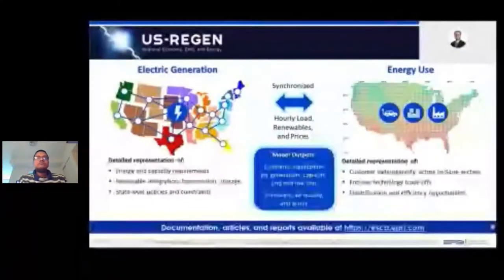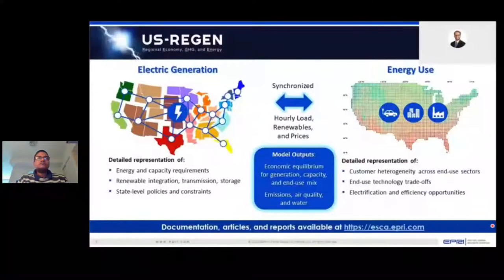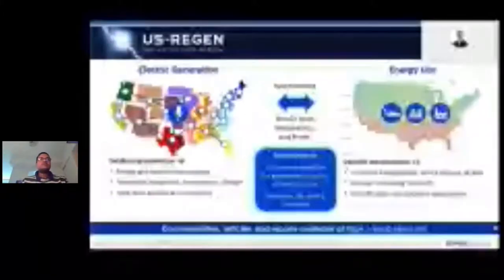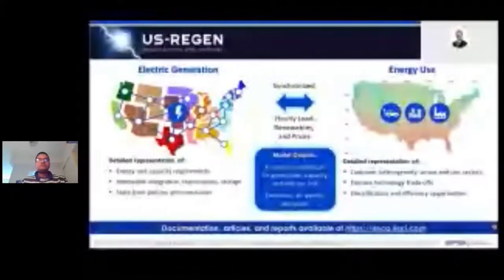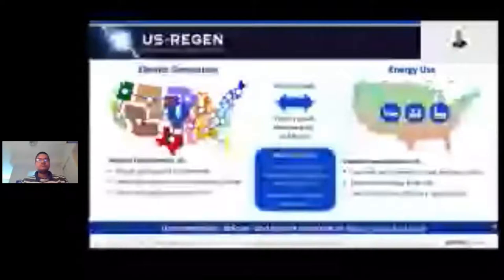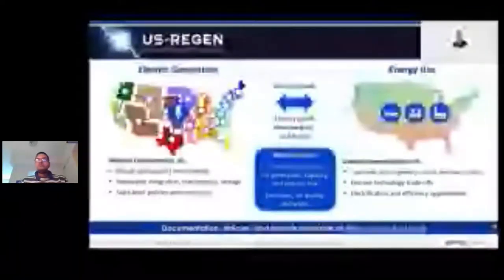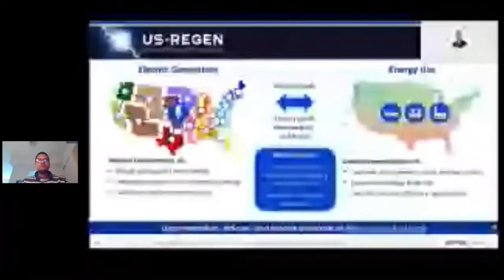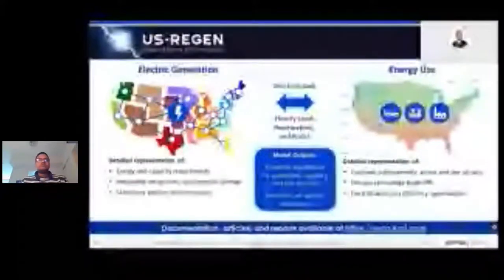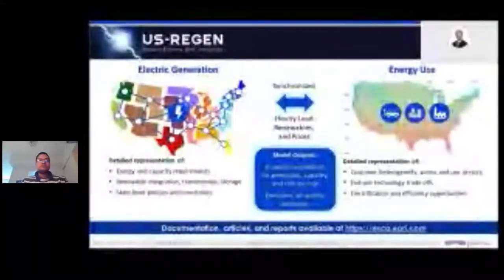To investigate these questions, we use our US REGET model. A few key features of the electric sector model: it makes simultaneous decisions about capacity planning, transmission, and dispatch, all maintaining hourly correlations between load, wind output, and solar output. It has pretty detailed spatial and temporal resolution. Here we are using an 8,760 hourly resolution given the importance of different forms of energy storage. Both models are supported by EPRI engineering expertise and technology projections.